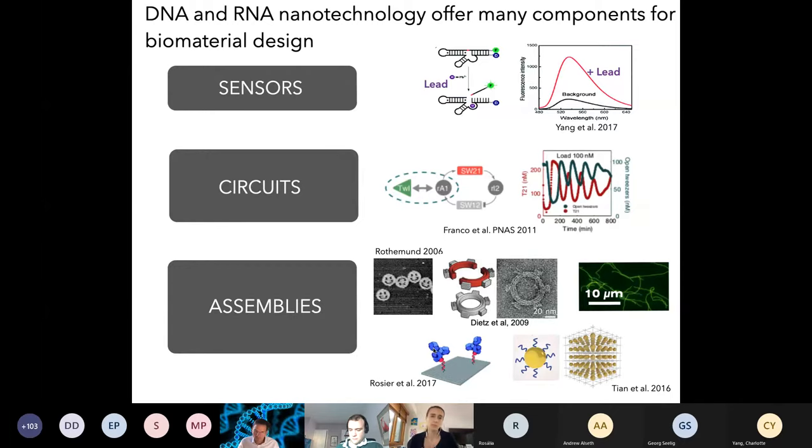You probably all know about aptamers. They are nucleic acid sequences that respond to particular inputs by changing conformation, and by that change of conformation, they transmit the information that they have sensed something. There's a variety of circuits available. Here I'm showing you a molecular oscillator that was developed many years ago and basically responds to the presence of the right enzymes by generating periodic up and down signals. Then there's a variety of assemblies, from a few nanometers in size to tens of microns. Those assemblies can be connected to other biological components, such as proteins, but also to non-biological elements like nanoparticles.